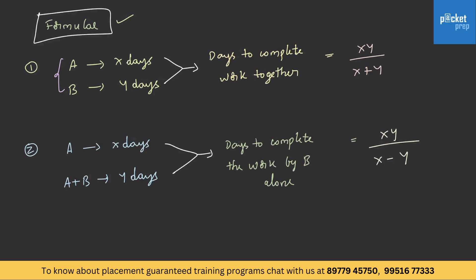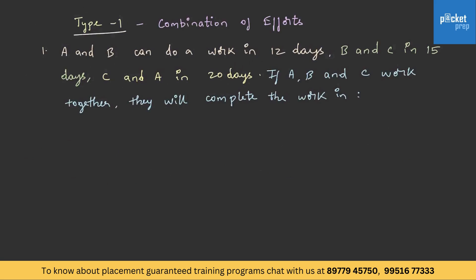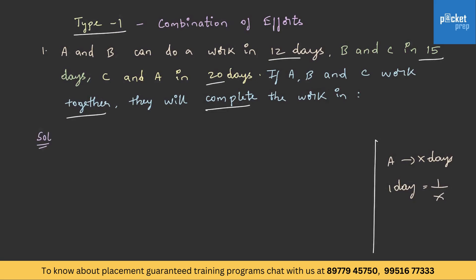Having understood the shortcuts and formulae, let's solve Type 1 questions. A and B can do a work in 12 days, B and C in 15 days, and C and A in 20 days. If A, B and C work together, they will complete the work in how many days? A plus B's one day work will be 1 by 12. Similarly, B plus C will be 1 by 15 and C plus A will be 1 by 20.